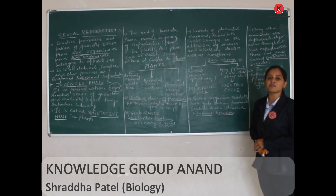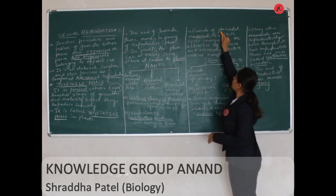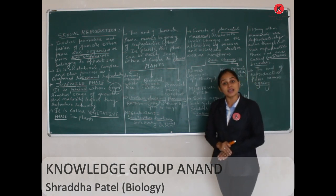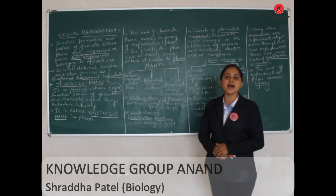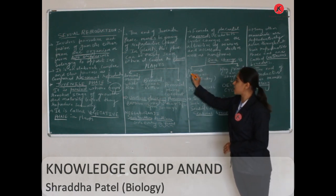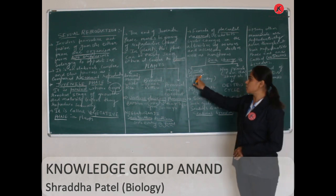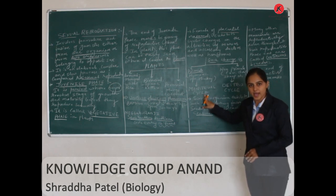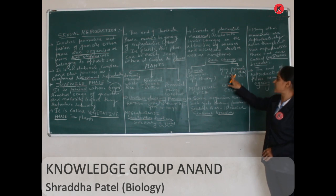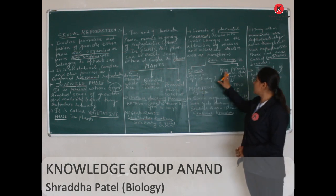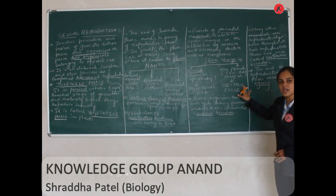Now, talking about females of placental mammals — females of placental mammals exhibit cyclic changes in the ovaries, accessory ducts, as well as hormones. Such cyclic changes in non-primate mammals like cow, deer, and sheep is called the oestrous cycle.